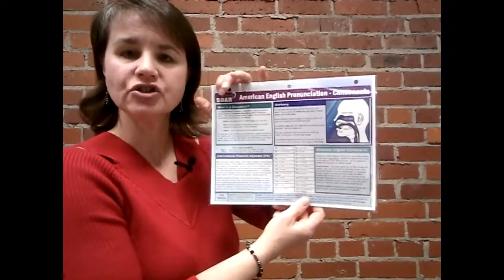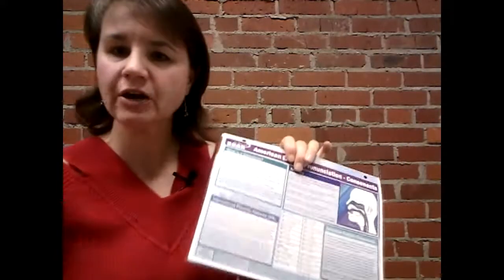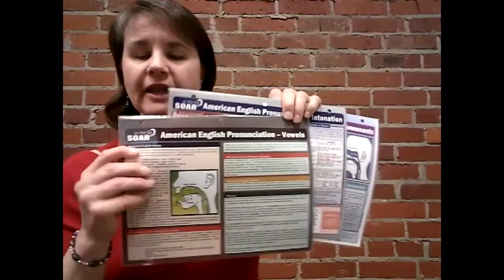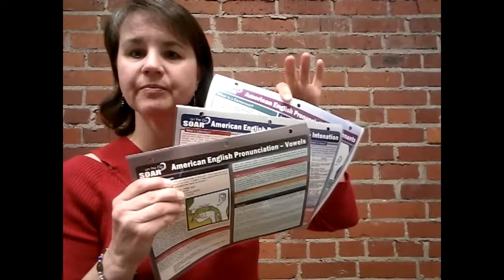Last but not least is our consonants chart, which also has illustrations and descriptions for each of the different consonant sounds in English. It includes IPA symbols, typical spellings, and also little-known consonant errors and how to improve them. Please check out our charts — we think that you'll really like them and find a lot of value in them. Thanks for listening!